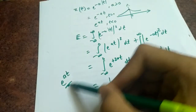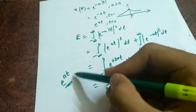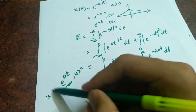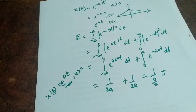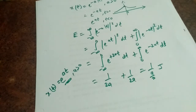This next one is homework for you: find the energy for the given signal, where a is greater than zero. Post the answer in the comment box.